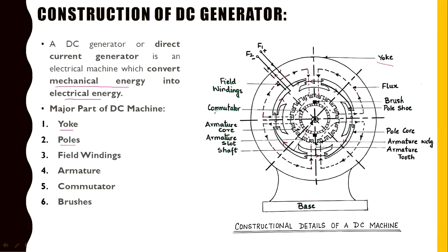The major parts of the DC machine are: poles — this is a four-pole machine, and each pole has two parts: the pole core and the pole shoe. We also have field windings, represented here as F1 and F2, which are placed on the poles. Inside the poles we place the armature, which is further classified into the armature core and armature winding. There is also a commutator, two brushes, and finally the shaft.